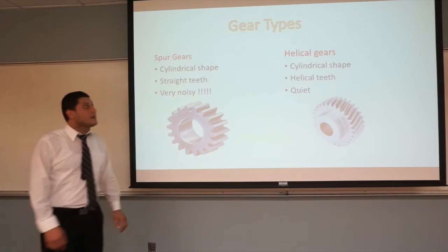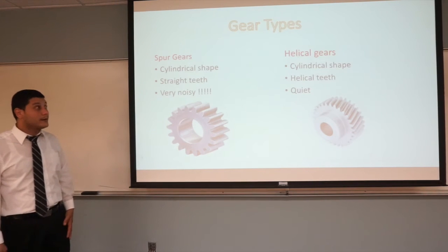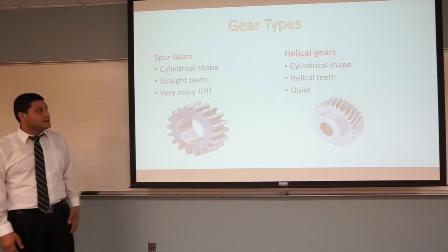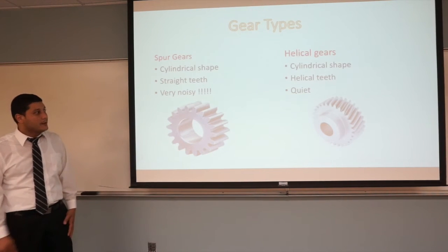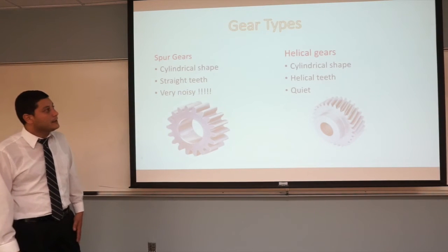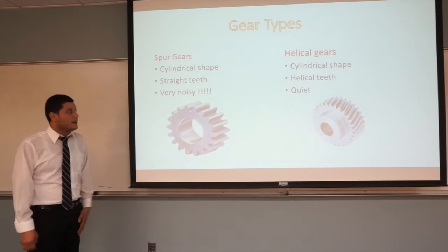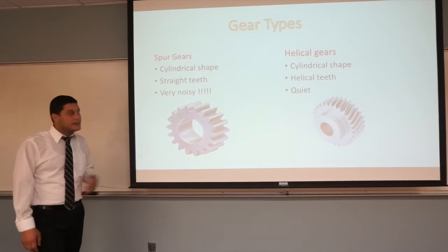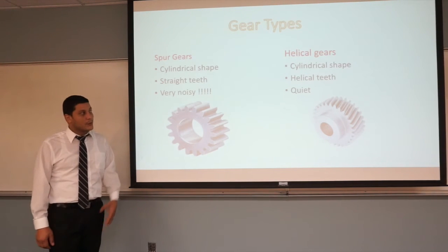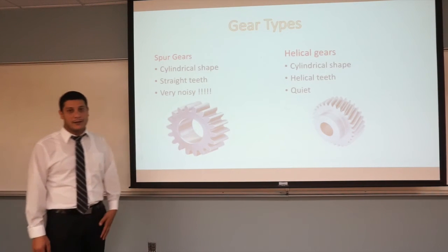Now let me talk about gear types utilized in gear trains. The main two types are the spur and helical gears. They both have a cylindrical shape; the main difference is the form or shape of their teeth. Helical gears have angled teeth while the spur gear has straight teeth parallel to the axis of the gear. At higher speeds, spur gears become very noisy, so it's recommended to use them just for lower speeds, while helical gears are very quiet at any given speed.